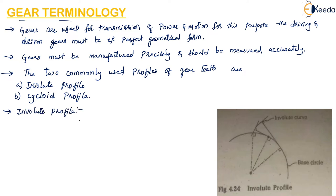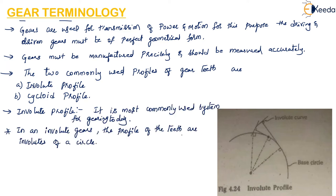The involute profile is the most commonly used system for gearing today. In this profile, the profiles of the teeth are involutes of the circle. So what is the involute of a circle? There is a curve produced called the involute curve. We can define this involute curve of a circle as the spiraling curve which is traced by the end of an imaginary taut string unwinding itself from a stationary circle called the base circle.